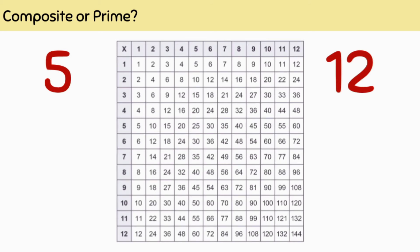Have a closer look at this chart. You can see that five only appears twice on the chart, which is one times five and five times one. Therefore, five's factors are only one and five, making five a prime number.